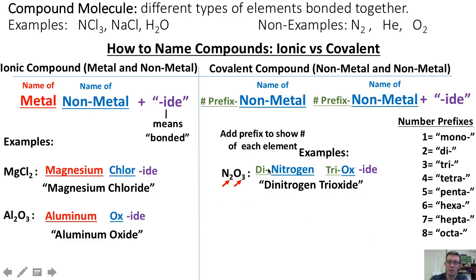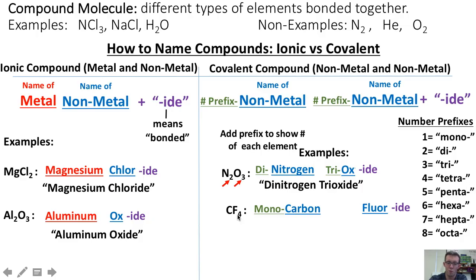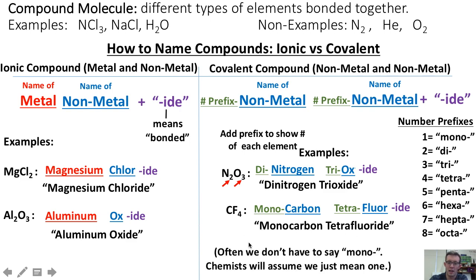Another example of a covalent compound is CF₄. To name this compound, we would take the first nonmetal, carbon, followed by the second nonmetal, fluorine, and add the suffix "-ide" to show that carbon and fluorine are bonded together. Then we add prefixes: since there is one carbon atom, we add "mono-" in front of carbon, and since there are four fluorine atoms, we add "tetra-" in front of fluoride. So the name is monocarbon tetrafluoride, although chemists often drop the mono and just say carbon tetrafluoride.